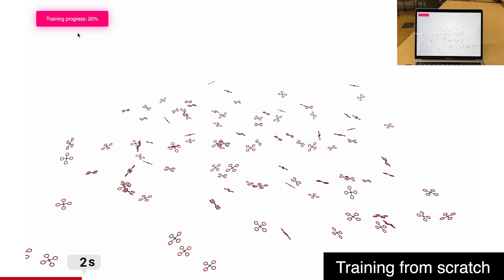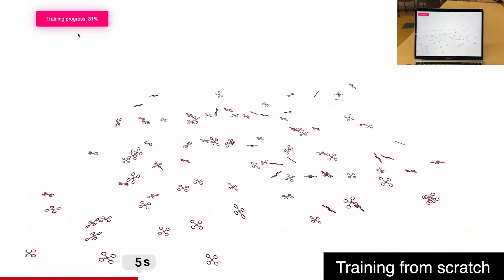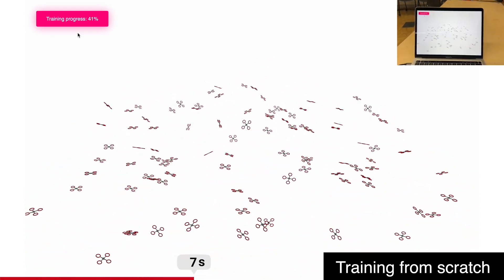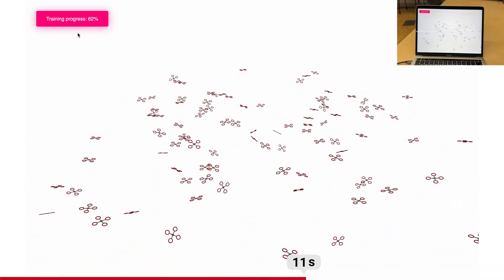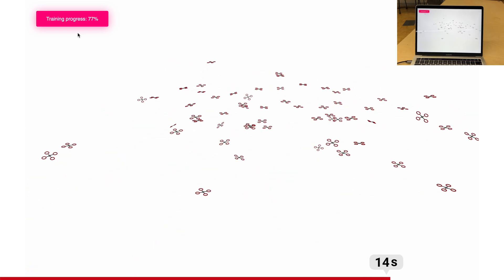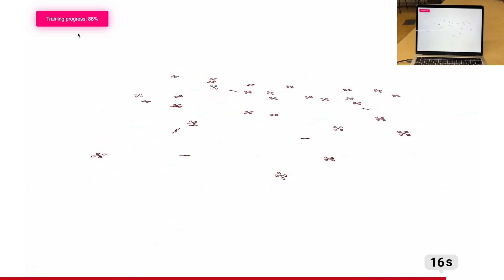In the beginning the quadrotors crash all the time, but after only a few seconds they start to learn to fly. After about 300,000 total environment steps we reliably find end-to-end control policies that work on the real quadrotor without cherry-picking random seeds.